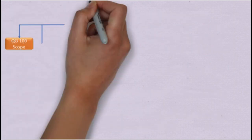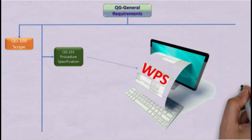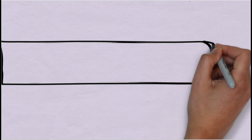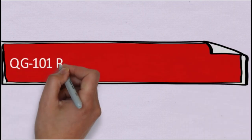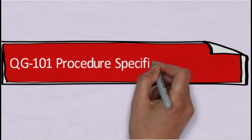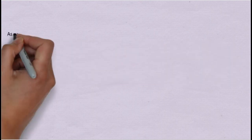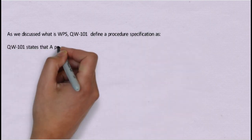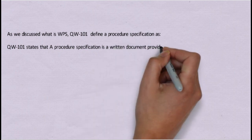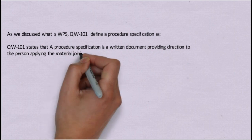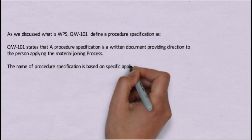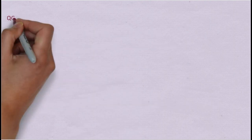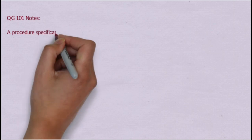The next part is QG101, which is for Procedure Specification. This is applicable for all parts — QW, QB, and QF. QG101 defines a procedure specification as a written document providing direction to the person applying the material joining process. The name of the procedure specification is based on the specific application: it is called WPS under QW, Brazing Procedure Specification under QB, and Fusing Procedure under QF.